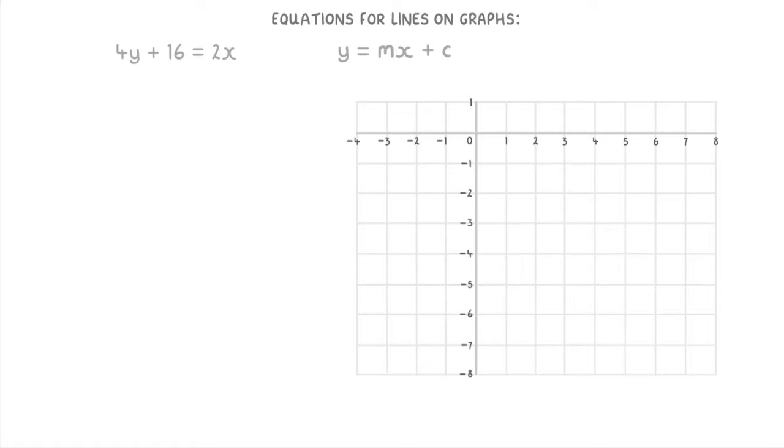The first thing we need to do is rearrange it to get it into the form of y equals mx plus c. So we need to subtract 16 from both sides to get 4y equals 2x minus 16.